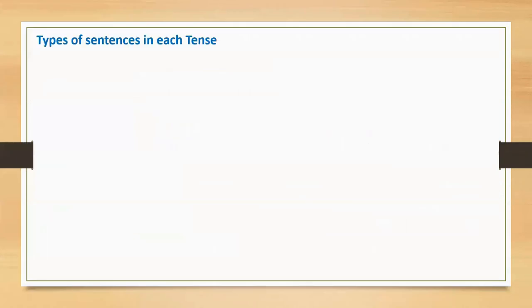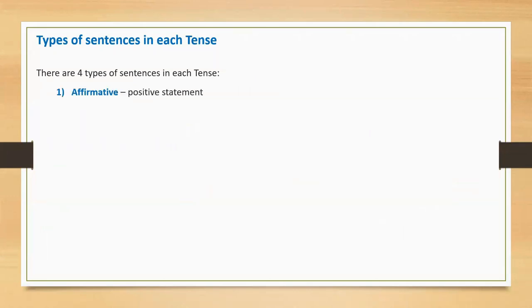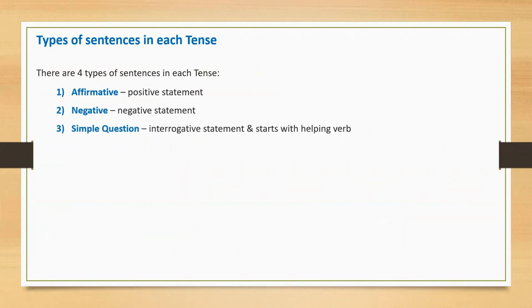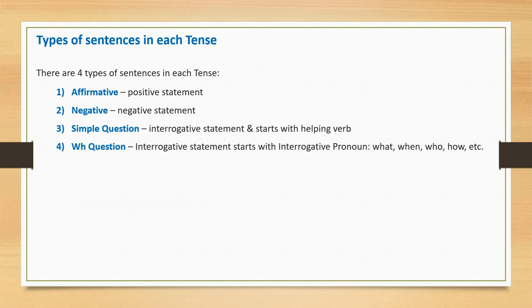Types of sentences in each tense. There are four types of sentences in each tense: affirmative sentence (positive statement), negative sentence (negative statement), simple question sentence (interrogative statement, starts with helping verb), and WH question sentence (interrogative statement, starts with interrogative pronoun like what, when, who, how, etc.).